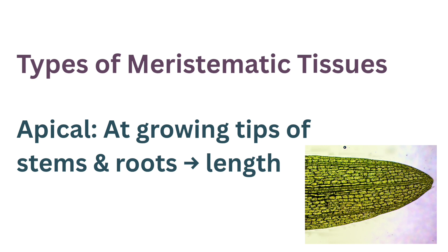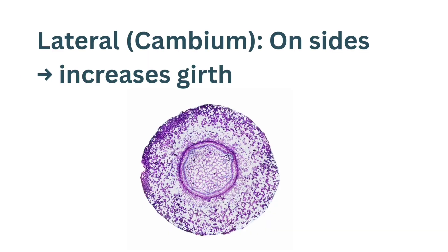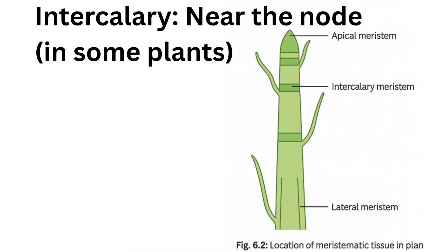Apical meristem, as the name indicates, is found at the apex of stems and roots — that is, at the growing tips. It helps to increase the length of the plant. The thickness of stems and roots increases due to the activity of another meristem called lateral meristem, which is also known as cambium. So apical, lateral and intercalary meristem are the three types of meristems based on their position or location.